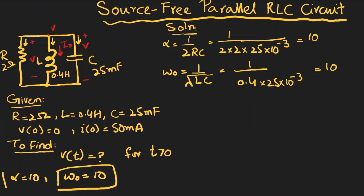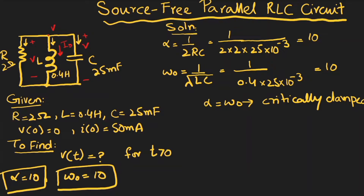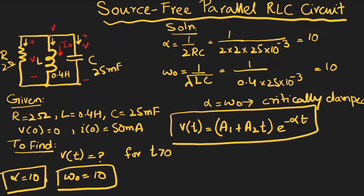Since alpha equals omega-naught — both equal 10 — we know that when alpha equals omega-naught the response is critically damped. Therefore, the corresponding response in terms of voltage is v(t) equals (A₁ plus A₂·t) times e^(−αt). We call this equation 1, and we need to find the values of A₁ and A₂.